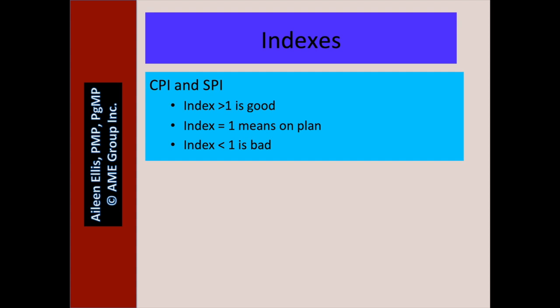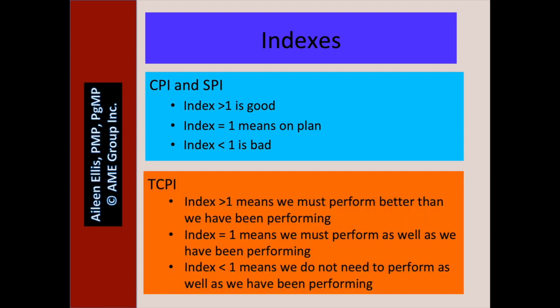To compare and contrast: with CPI and SPI, indexes greater than 1 are good, equal to 1 means on plan, and less than 1 is bad. With TCPI, a value greater than 1 means we must perform better than we have been — it's harder to achieve. An index equal to 1 means we must perform as well as we have been. A TCPI less than 1 means we do not need to perform as well, so it's easier to achieve. Now let's look at a whole group of sample questions to wrap up this video.